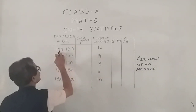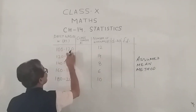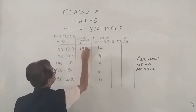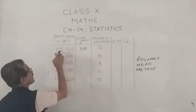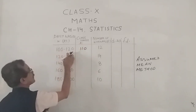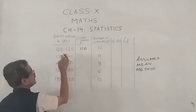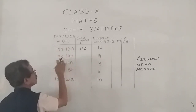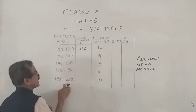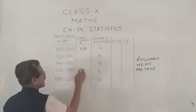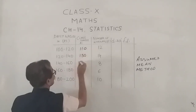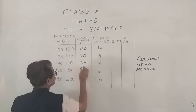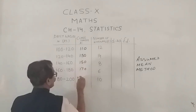Class marks are calculated as lower limit plus upper limit upon 2. The class size is 120 minus 100, which is upper limit minus lower limit, equal to 20. Since the class size is the same, go on adding 20 to get the successive class marks. This will reduce your calculations.